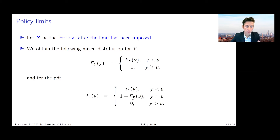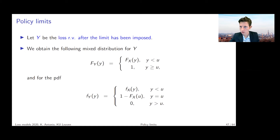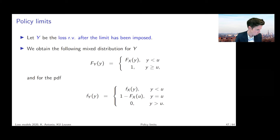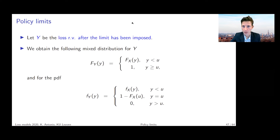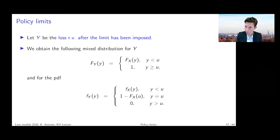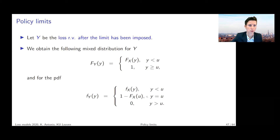Looking at the PDF of Y — assuming that the underlying random variable X has a positive and continuous distribution — the PDF of Y equals the PDF of X evaluated at y when y is below U. There is also a probability mass placed at the point Y equal to U, and this probability mass equals the probability that X, the underlying random variable, goes above the policy limit U. This is a mixed type of distribution: a continuous distribution combined with a probability mass placed at the value of the policy limit U.